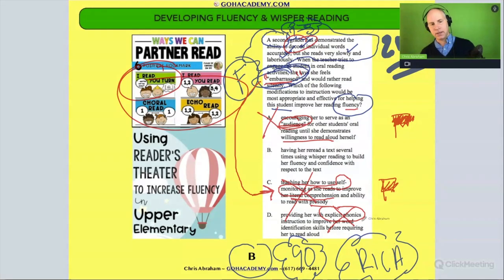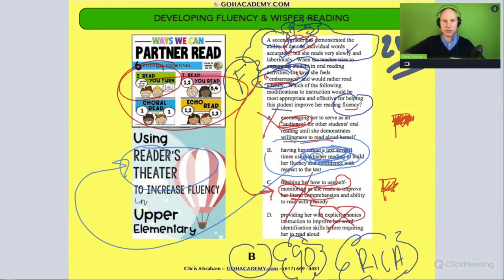Having her reread a text several times using whisper reading to build her fluency and confidence with respect to the text. Whisper reading is exactly what you do—let's say if you're doing reader's theater, you read a text several times quietly to yourself, and what that's doing is building up that speed, accuracy, and expression until the point where you feel confident to read it out loud. Whisper reading is another way of building speed, accuracy, and expression. In this case, by whisper reading it would ultimately help with fluency and with her success in reading that text fluently. It would help with her confidence too. That's the best answer here.